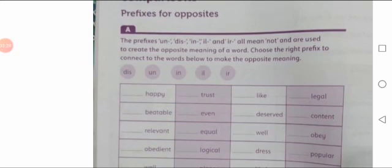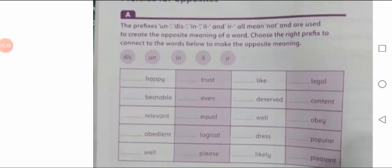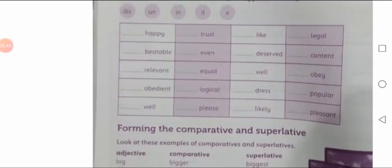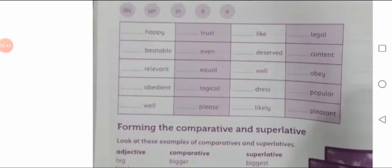Choose the correct prefix to connect to the words below to make the opposite meaning. Some prefixes are given — the letters which we are to add at the start of the word to make new words. So the prefixes are: DIS, UN, IN, IL, and IR.